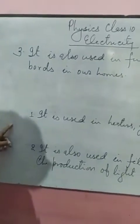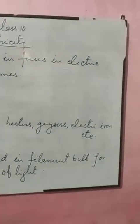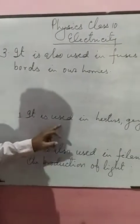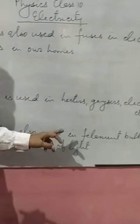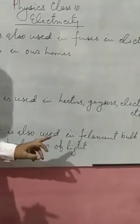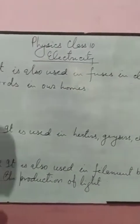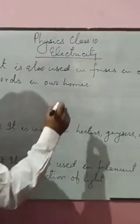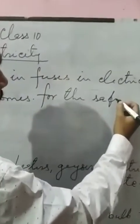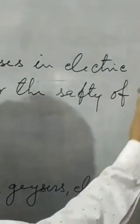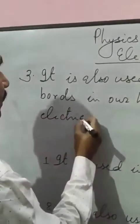So, the heating effect of electric current — in other words, Joule's law of heating — is used in three conditions. The first is it is used in heaters, geysers, electric iron, etc. It is also used in the filament bulb for the production of light. And the third point is, it is also used in fuses in electric boards in our homes for the safety of electric appliances.